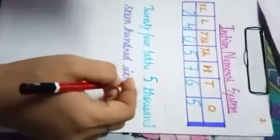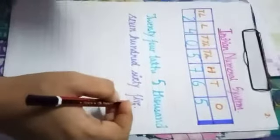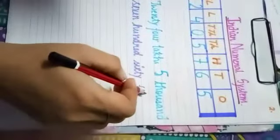So now it becomes very easy to read this number. So what is this number? This number is equal to 24,05,765.